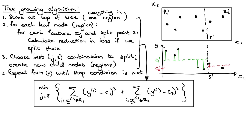That really concludes our discussion of how you grow regression trees. These are technically called regression trees, though very often we just talk about using a decision tree for regression, which is technically not always correct but is common usage. In the next video, we will look at some things that we need to keep in mind when using these practically.